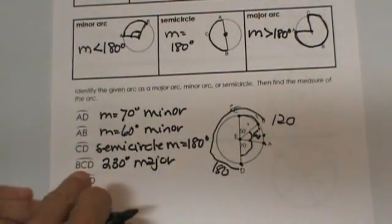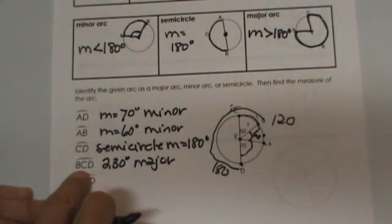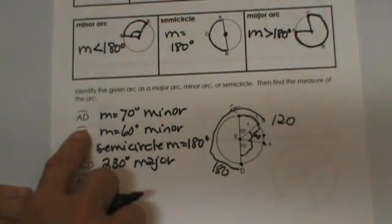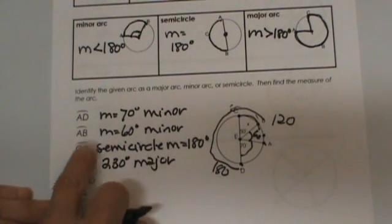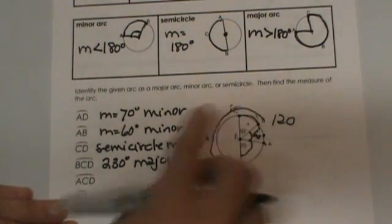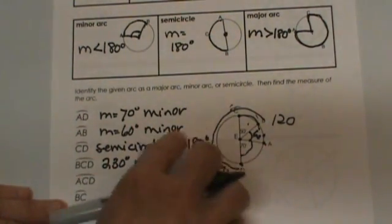Now notice major arcs are named with three letters instead of two. Minor arcs are named with two. Even a semicircle can be named with two. It is actually preferable to use three for a semicircle, so you know which direction you are going, but if all they are asking for is the measure we know this is 180.